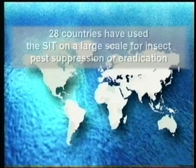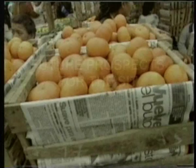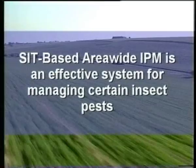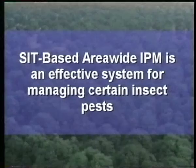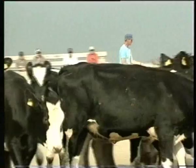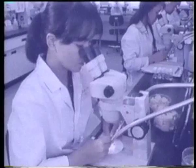At least 28 countries have used the SIT on a large scale for insect pest suppression or eradication. The future prospects for the SIT are bright indeed. In concept and application, area-wide IPM is an effective system for managing certain insect pests. The emphasis in pest management today is on biological, environmentally safe, sustainable, ecological, and economical pest control technologies. This emphasis has made the SIT an appropriate method to suppress and sometimes eradicate insect pests. Already, the SIT will become a component of area-wide IPM systems for even more key plant and animal pests.